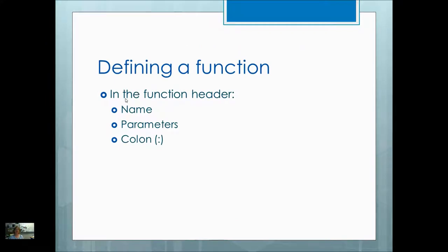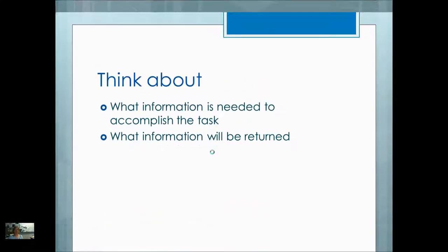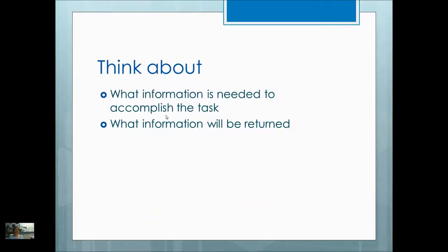When you're defining a function, these are the things that need to be included in the header: it has to have a name, and it should have any parameters. Parameters are not required, but if it does have parameters, they go in the header and it ends with a colon. What information do you need to accomplish the task, and what information will be returned? We're not really going to concern ourselves with how it does the task — just what does it need, and what will be returned.